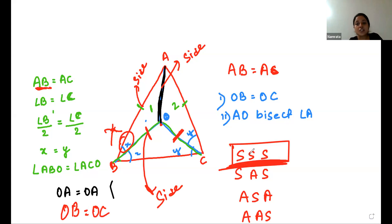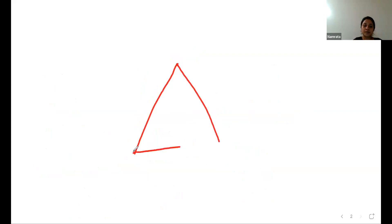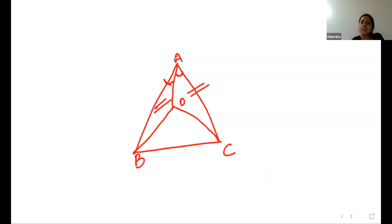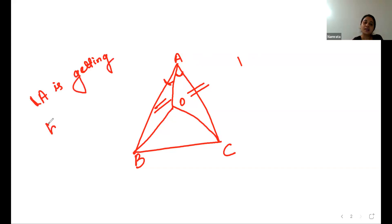Since triangles ABO and ACO are congruent, AO bisects angle A because the corresponding angle A of one triangle equals the angle A of the other triangle, by corresponding parts of congruent triangles. Hence angle A is bisected by AO.